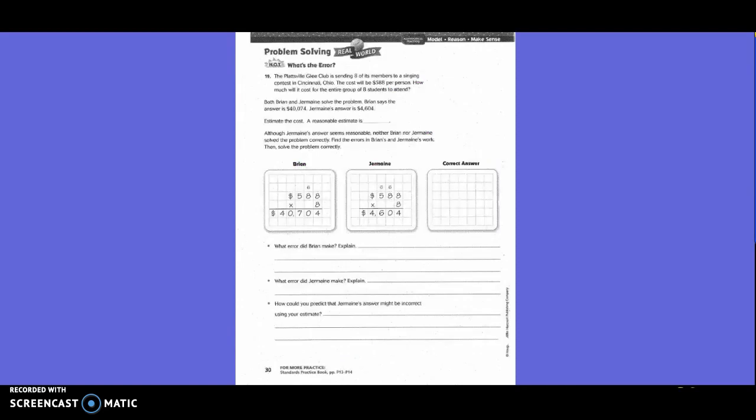Problem solving. What's the error? The Plattsville League Club is sending eight of its members to a seating contest in Cincinnati, Ohio. The cost will be $588 per person. How much will it cost for the entire group of eight students to attend? Both Brian and Jermaine solve the problem. Brian says the answer is $40,074. Jermaine's answer is $4,604. Estimate the cost. A reasonable estimate would be, so what would we estimate 588 to? 600. So we have 600 per person and 8 students, right? So we do 600 times 8. So 6 times 8 is 48 and add two zeros. So our estimate would be 4,800.